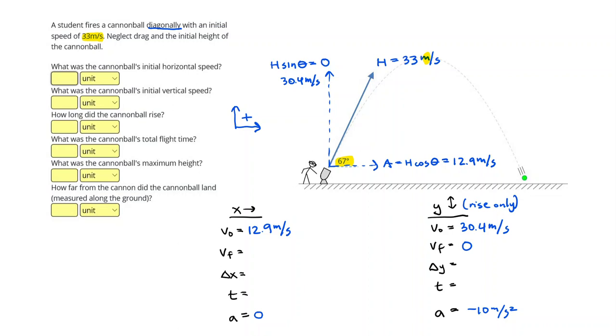I can go ahead and get my time interval by doing v final minus v initial divided by a, which gives me 3.04 seconds.